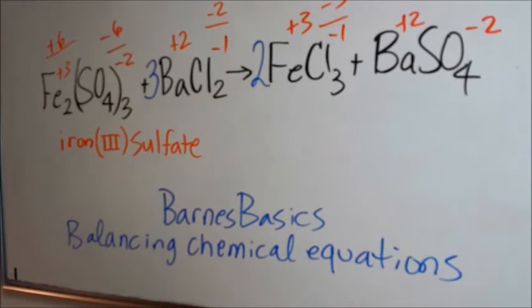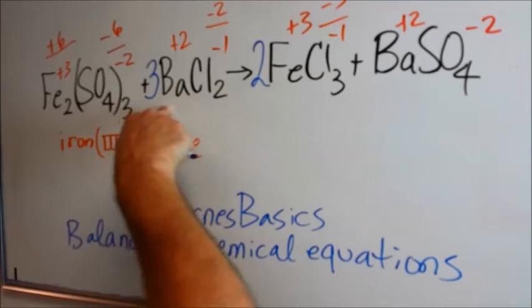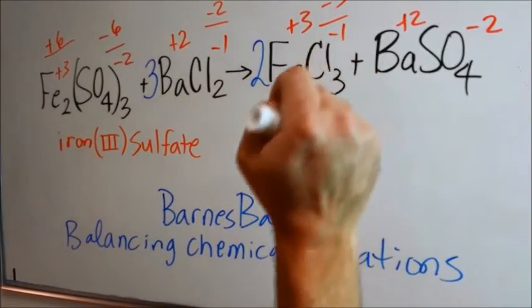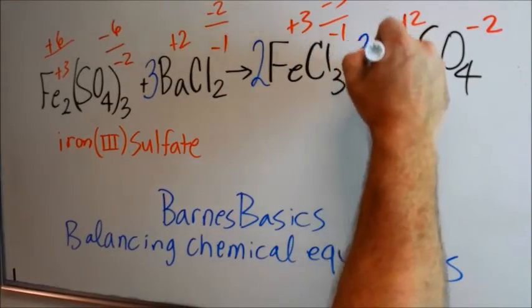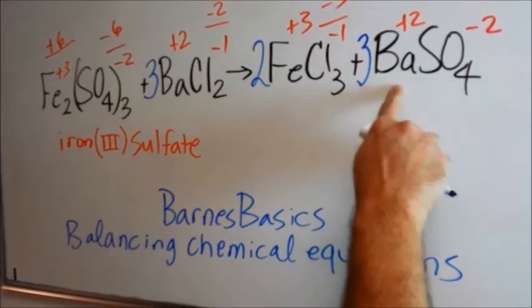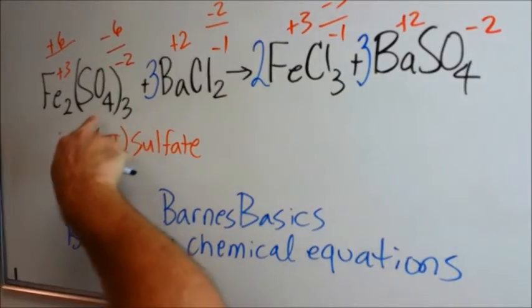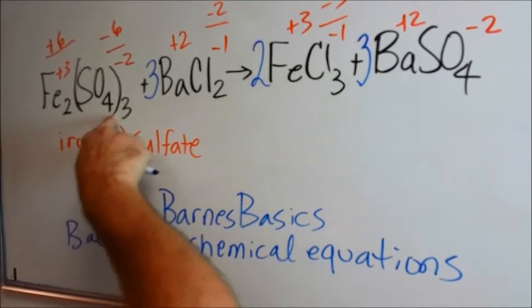By doing this I have then affected the bariums. So let's go back to the other side. There is one barium so let's put a 3 here. There are three bariums and now three sulfates. We go back to the other side there are three sulfates.